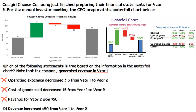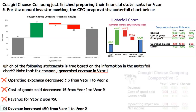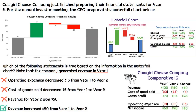The next option says revenue increased $50 from year one to year two. This is exactly what the waterfall chart shows us — we had a $50 increase, and because revenue has a positive impact on net income, that's why it's green and showing a positive $50. So revenue increased $50 from year one to year two is going to be the correct answer.